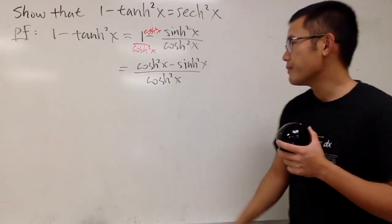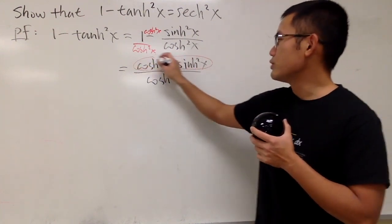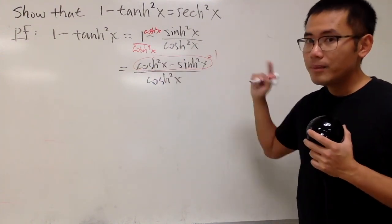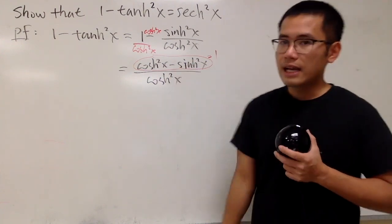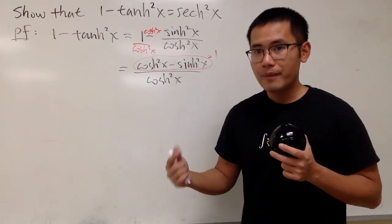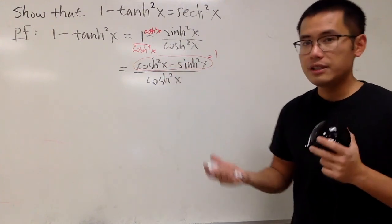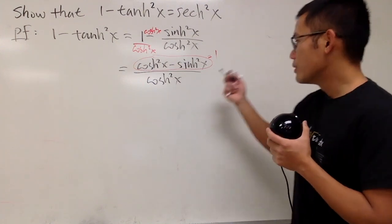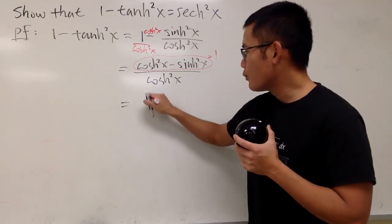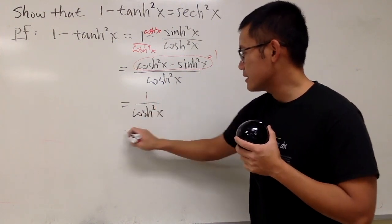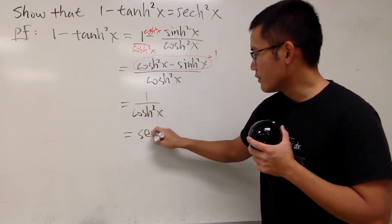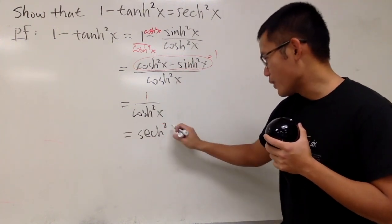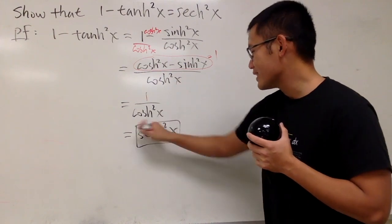Here is a really nice identity: cosh squared x minus sinh squared x equals 1. This comes from the hyperbola x squared minus y squared, where cosh is the x-value and sinh is the y-value on the hyperbola. So we just have 1 over cosh squared x, which by definition is exactly hyperbolic secant squared x. And with that, we are done!